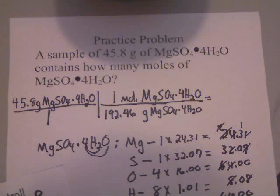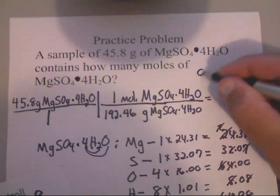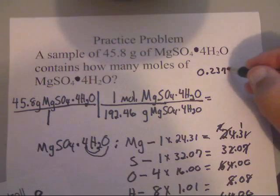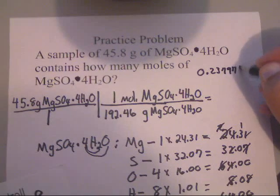Because 45.8 times 1 is 45.8, and 1 times 192.46 is 192.46. So, let's punch that in our calculator. We've got 45.8 divided by 192.46. It equals...